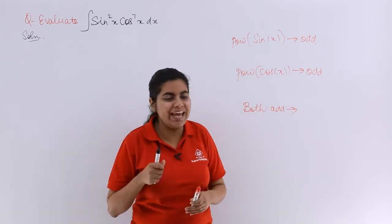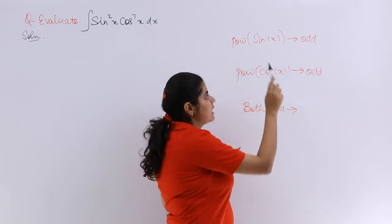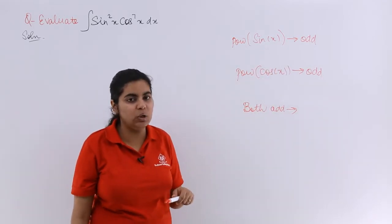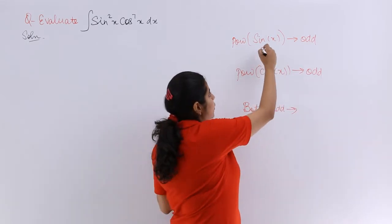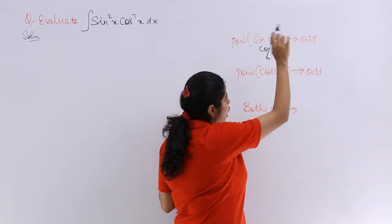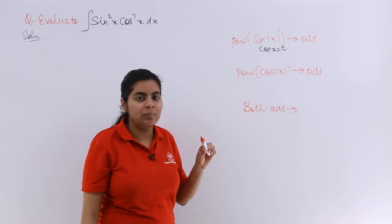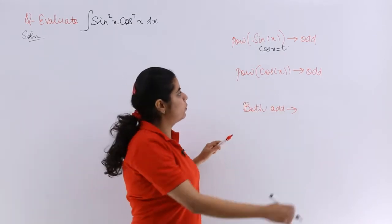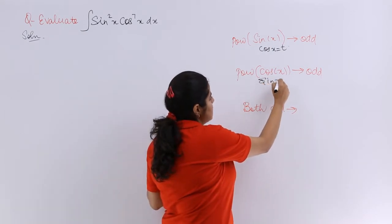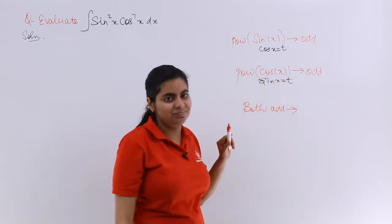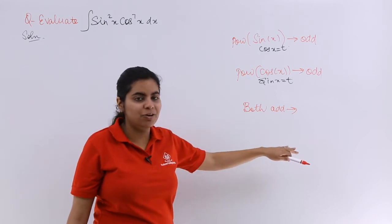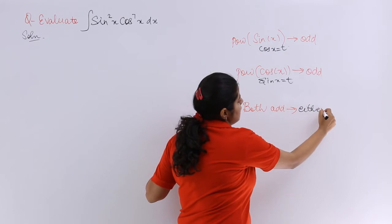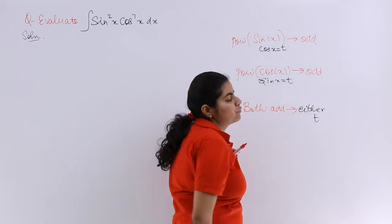If the power of sin x is odd, I will put cos x equal to t. If the power of cos x is odd, I will put sin x equal to t. If both are odd, I can put either of them as t and solve the further part of the question.